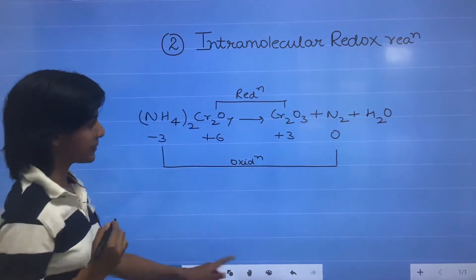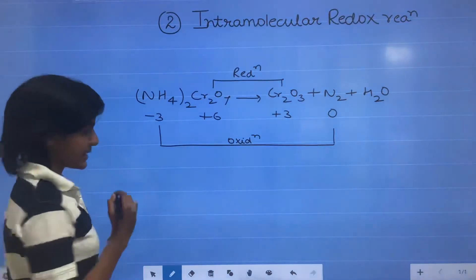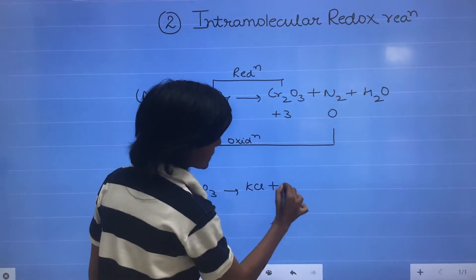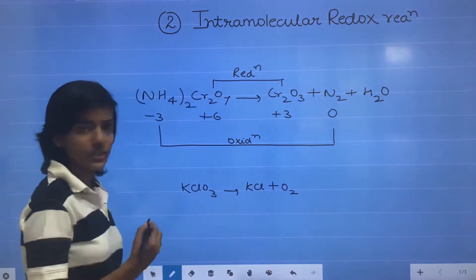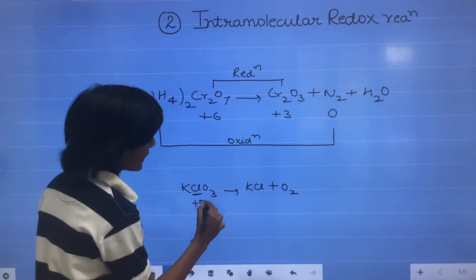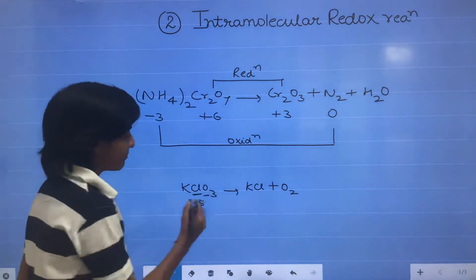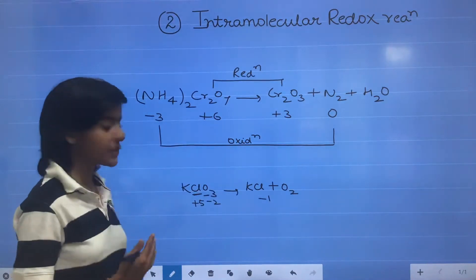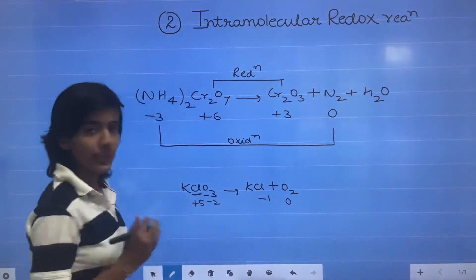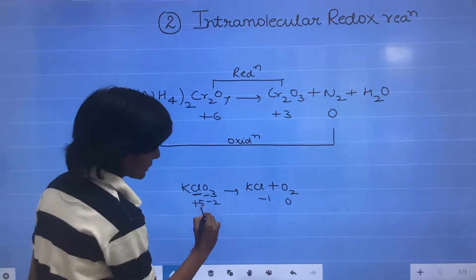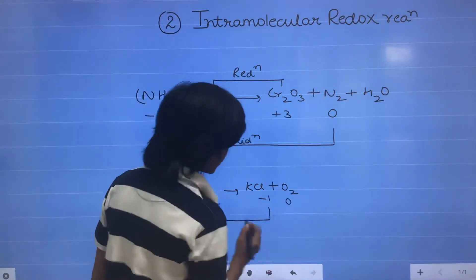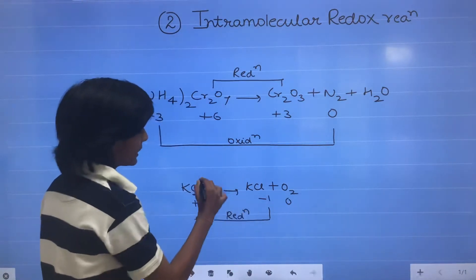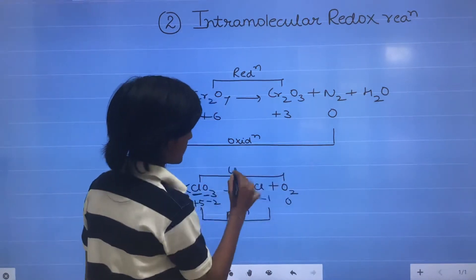Another example: KClO3 decomposes to form KCl plus O2. So the oxidation state of Cl is plus 5 and here it is minus 1, and the oxidation state of O2 is 0 as it is a homoatomic molecule. So there is a decrease in oxidation state of Cl, so it is reduction, and an increase in oxidation state of O, so it is oxidation.